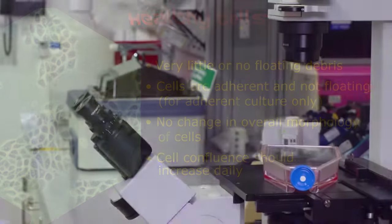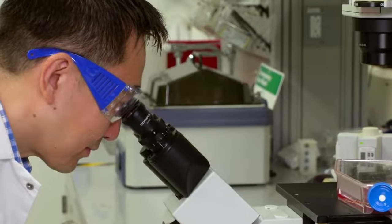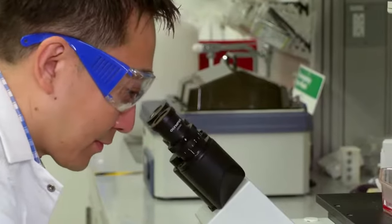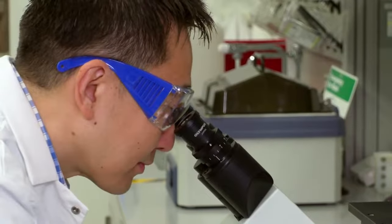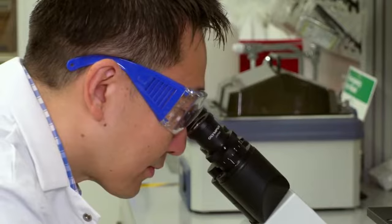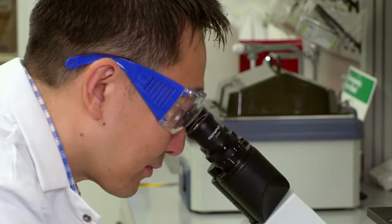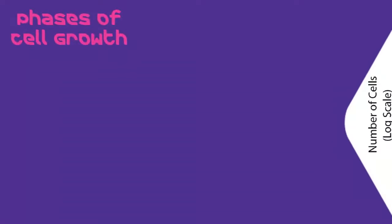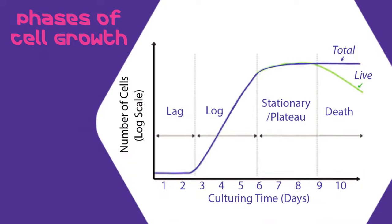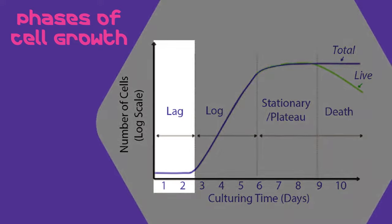Now let's talk about the concept of population density. Another reason for microscopic examination of the cells is to ensure adequate population density within a cultured vessel. A typical growth curve is shown here, with cell numbers plotted on the y-axis and culturing time plotted on the x-axis. The blue line indicates overall growth. The initial phase is characterized as a lag phase, where cells are adjusting to the new microenvironment and exhibit no or very little growth.